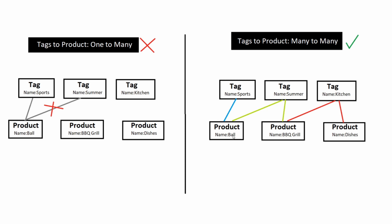With a many-to-many relationship, a ball can reference the 'sporting' tag and also reference the 'summer' tag. Then we can go ahead and take the barbecue grill product and reference 'summer' and 'kitchen' because it's somewhat related. This means a tag can be referenced by multiple products, and a product can also have many tags — so it's a many-to-many relationship.